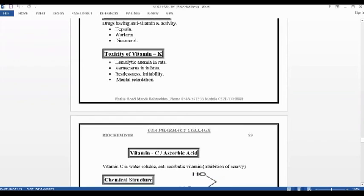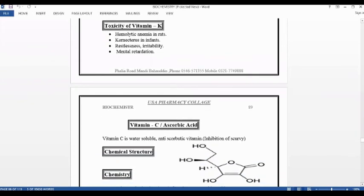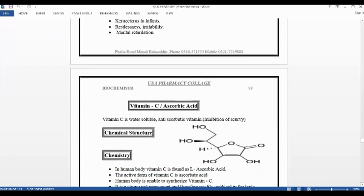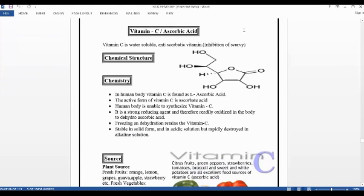Toxicity. If vitamin K increases beyond a certain level, toxicity occurs. Excess of everything is bad. Hemolytic anemia in rats. Kernicterus in infants - this disease can occur in children due to toxicity. Restlessness, irritability, mental retardation. These occur due to toxicity. So your vitamin K is complete.